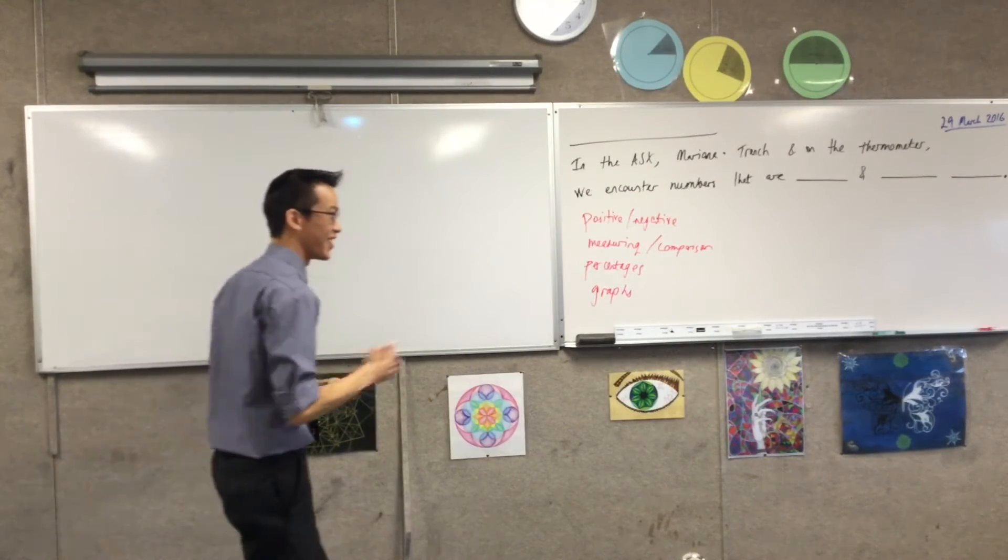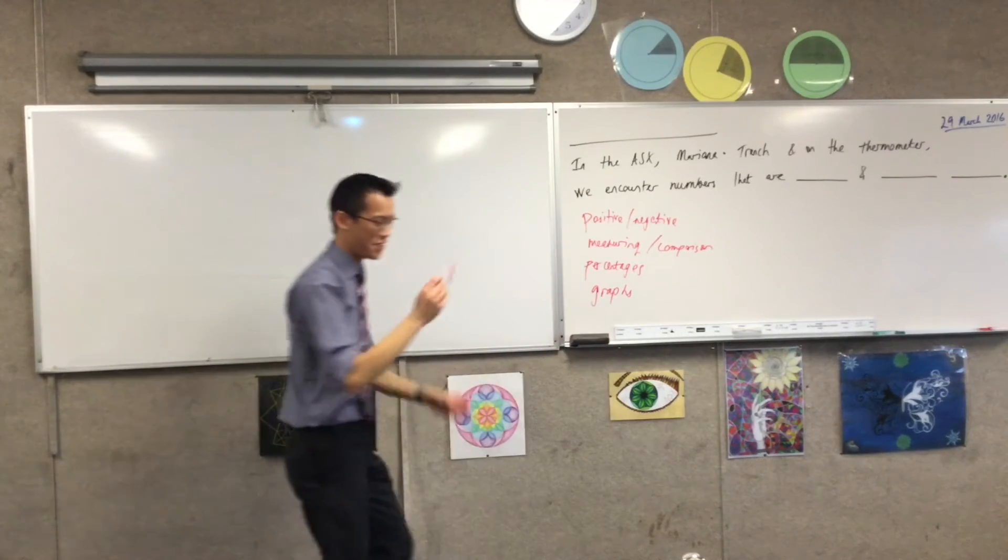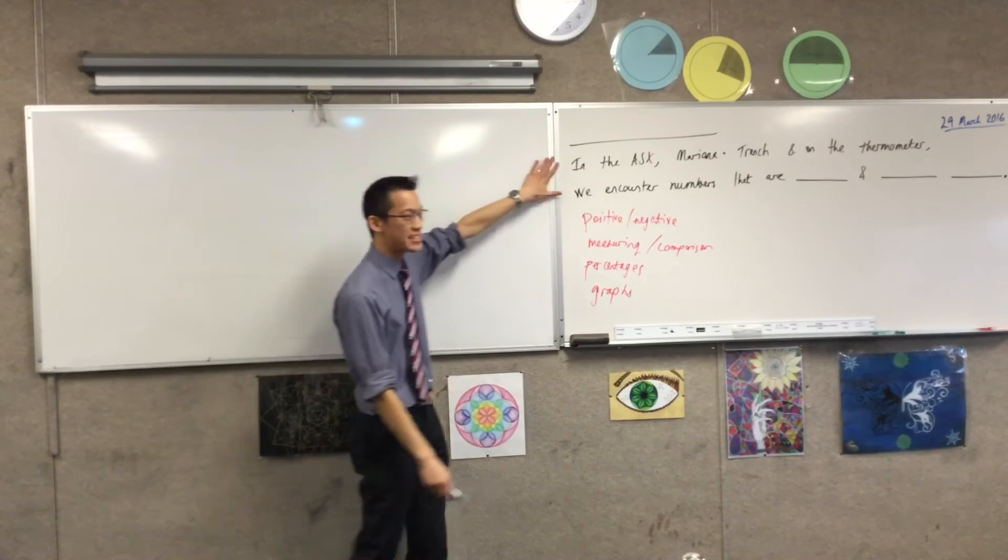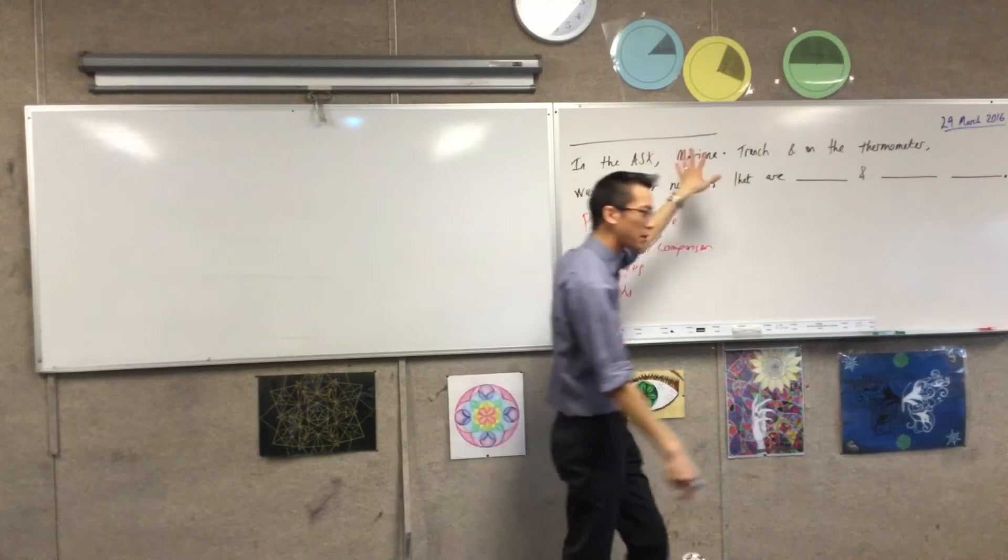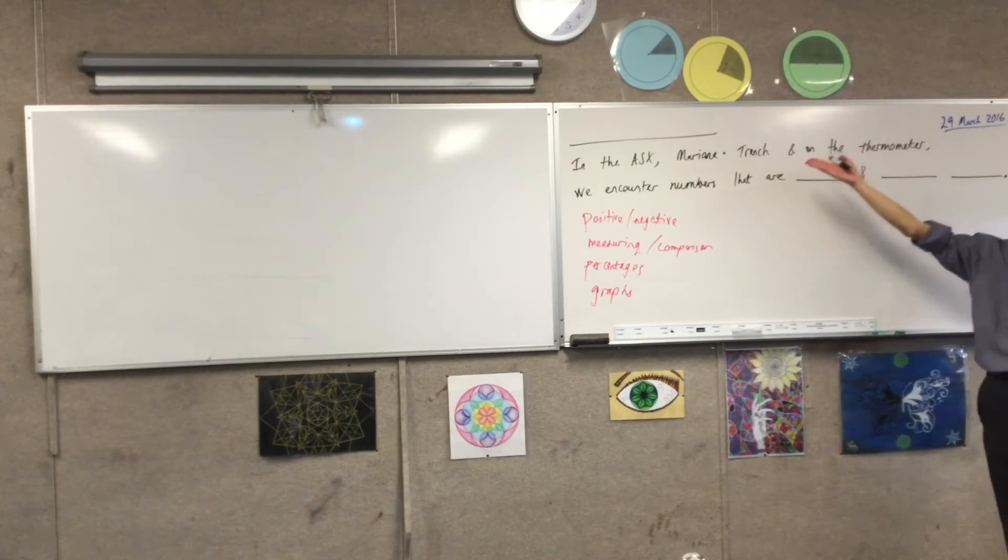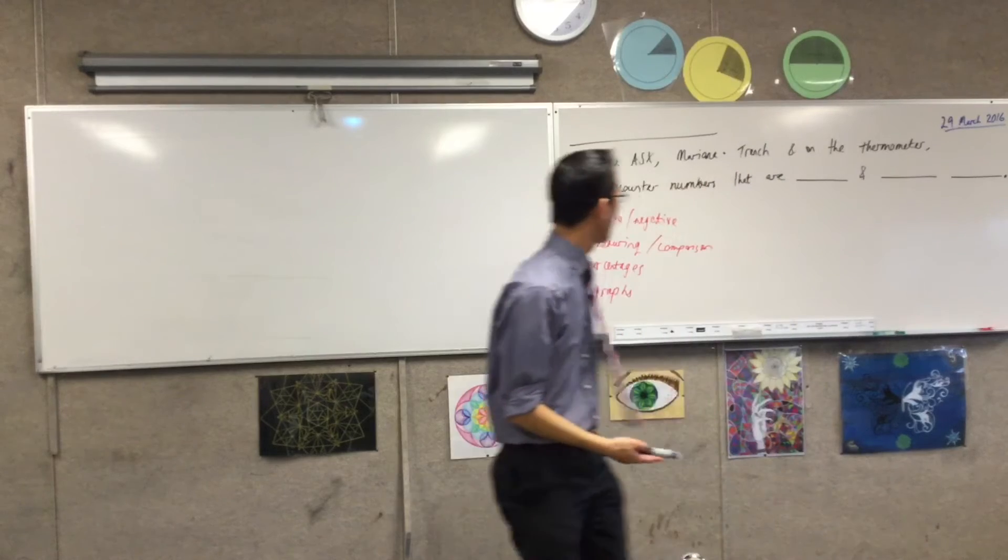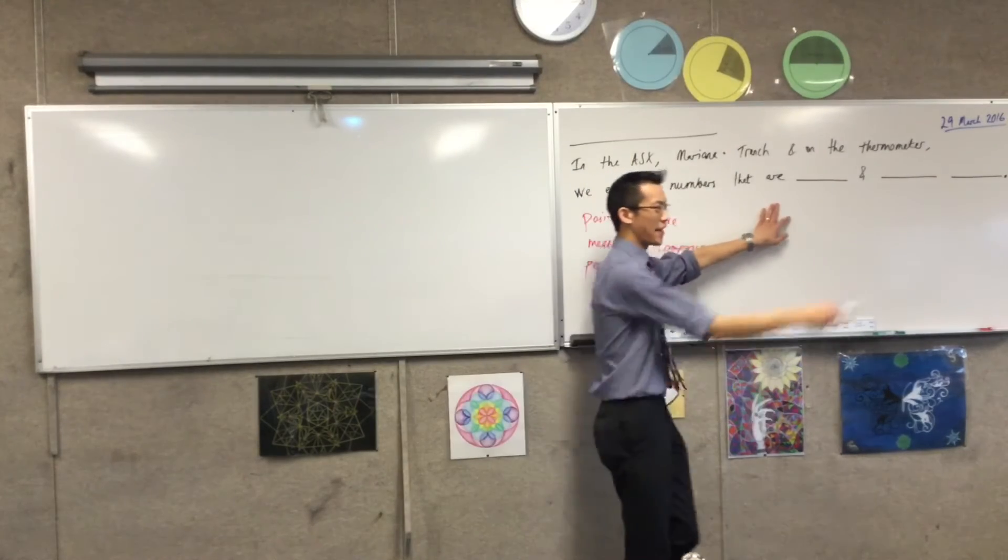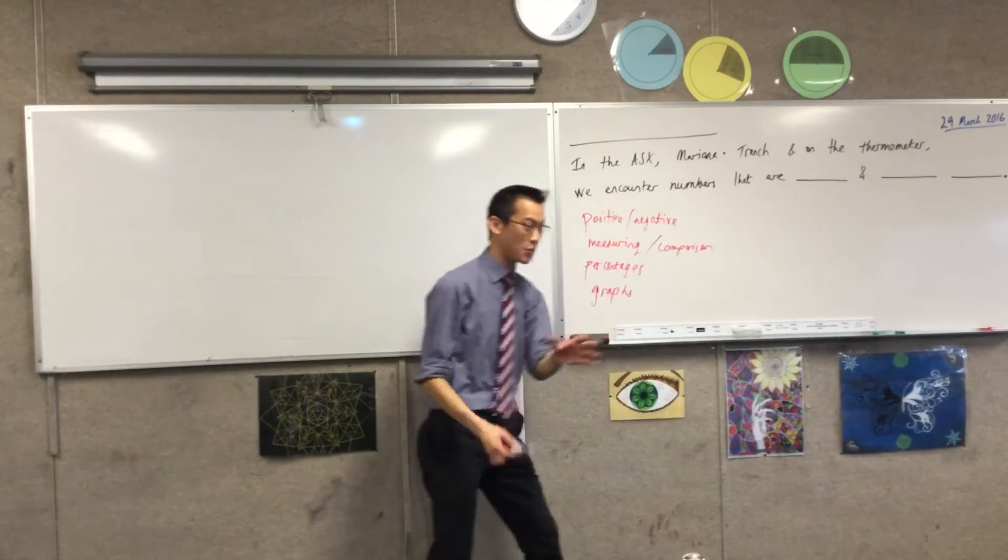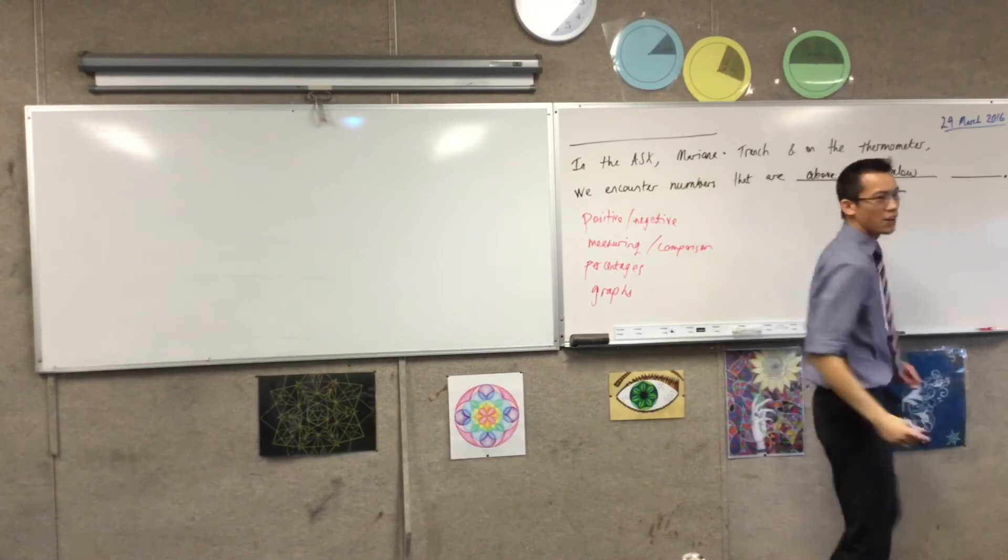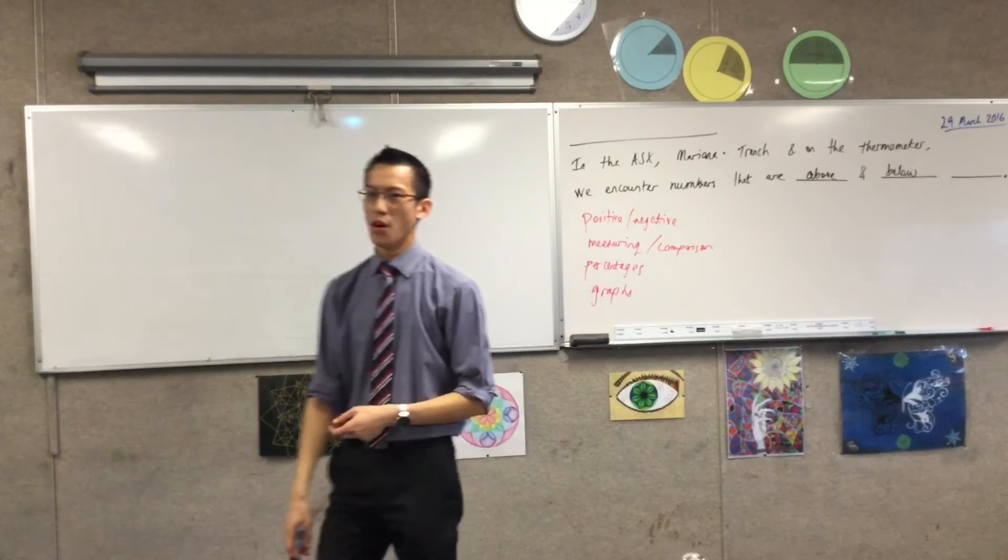Kimmy, did you have one more? They can all measure above and below a second. Yeah, okay. I'm going to use that, I'm going to pause there and use this as my segue into this little sentence, which I have written. If you have something equivalent on yours, you can finish off your sentence the way that I'm about to finish mine, or you can start a whole new sentence on your page there. In the Australian Stock Exchange, Mariana Trench, and the Thermometer, what we encounter, what we meet are numbers that are, and in fact I'm going to use Kimmy's exact words, above and below.